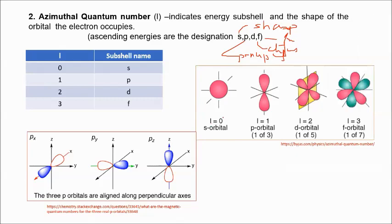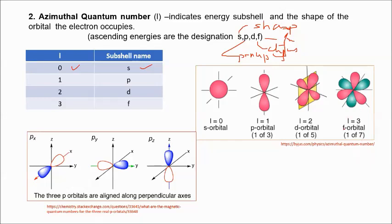For L = 0, we have the S orbital with a spherical shape. For L = 1, the P orbital is dumbbell-shaped — there are 3 P orbitals. For L = 2, the D orbital has 5 orbitals. For L = 3, the F orbital has 7 orbitals. The S sub-shell has 1 orbital, P has 3, D has 5, and F has 7.